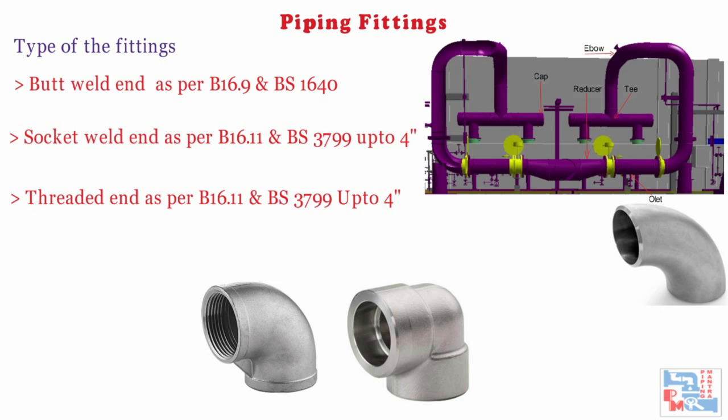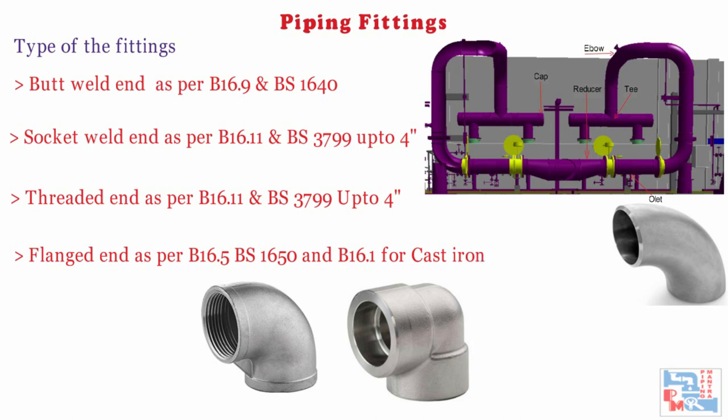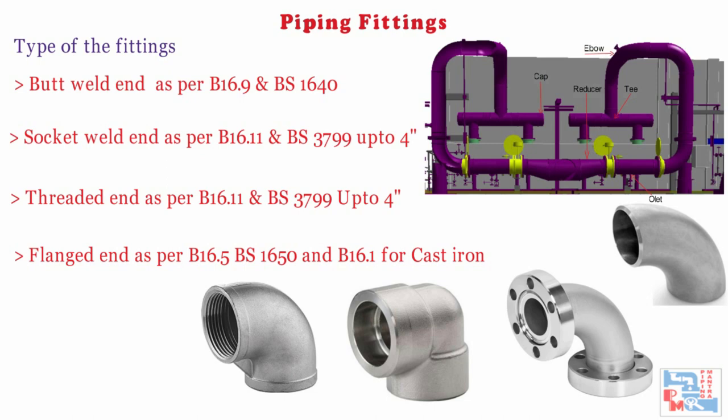For female threaded end fitting, the pipe should have a male threaded end. Flange end, as per ASME B16.5, BS1650, and ASME B16.1 for cast iron — pipes should have companion flanges. For example, for a raised face flange end, the pipe should have a raised face flange.